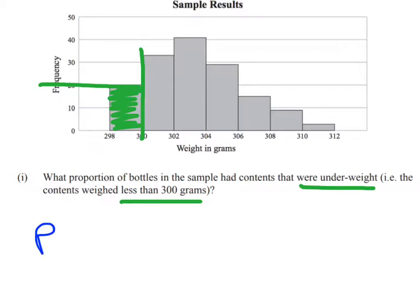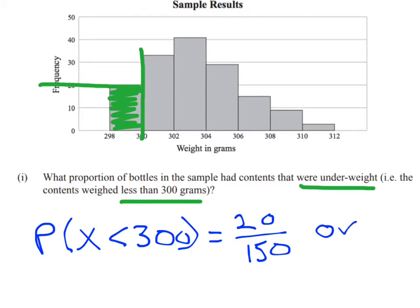So we can say the proportion of bottles that weigh less than 300 is equal to 20 out of the 150 bottles that were there. Well, that was from the sample, or if you want to write it as a decimal, that would be 0.1333.